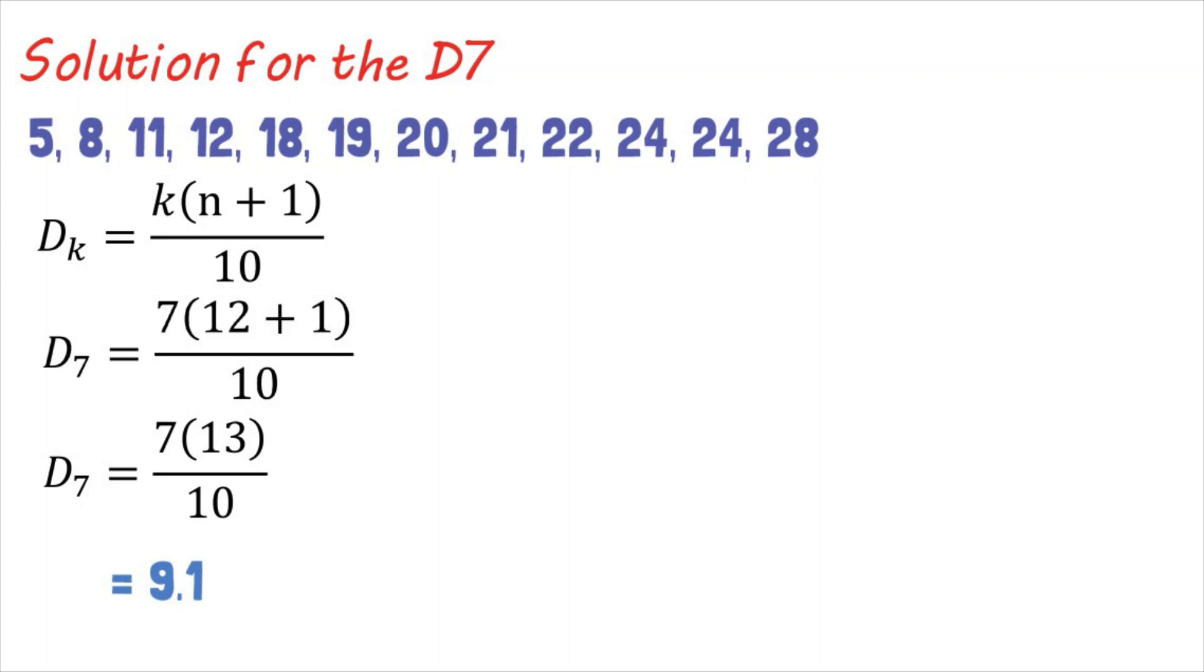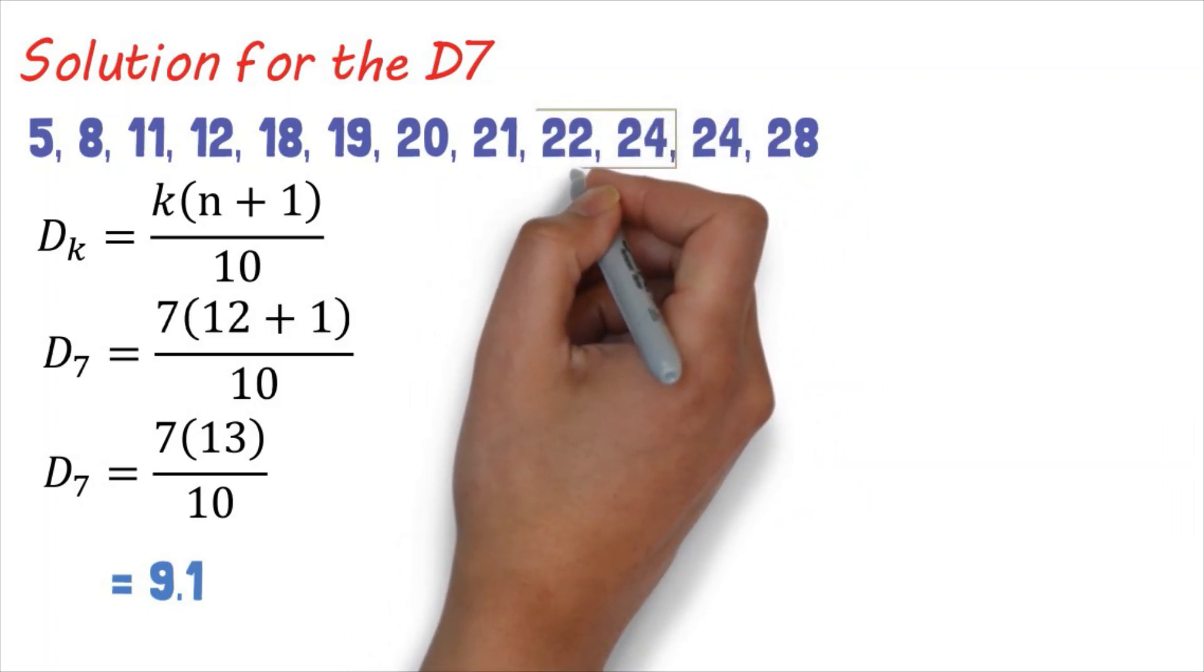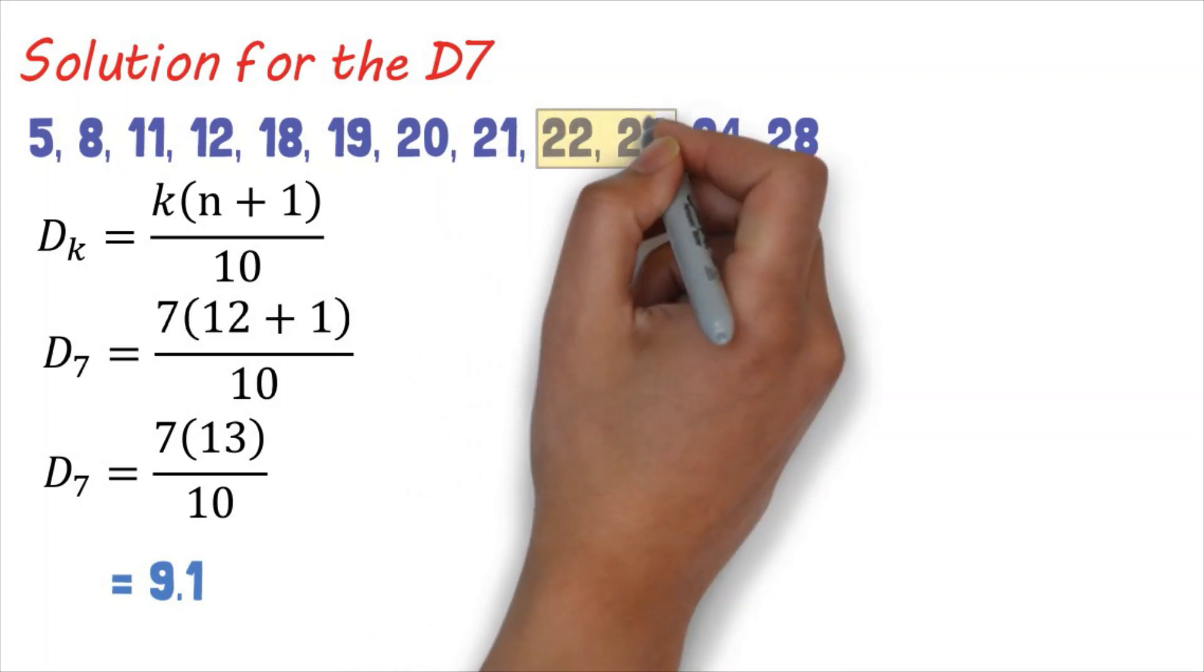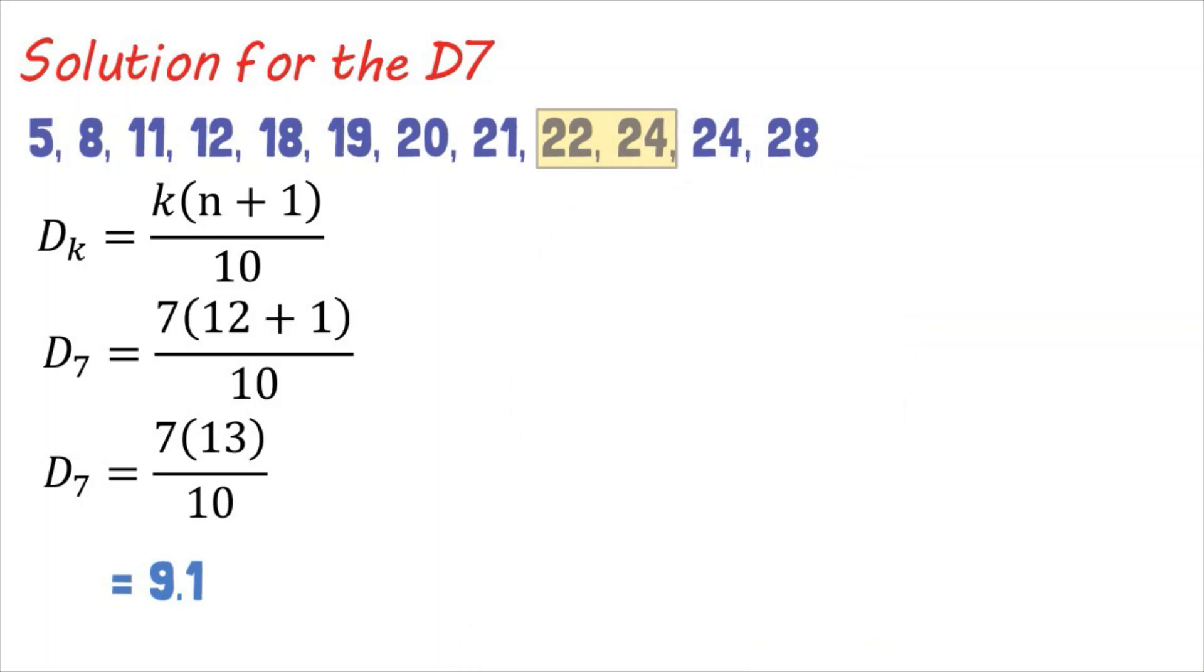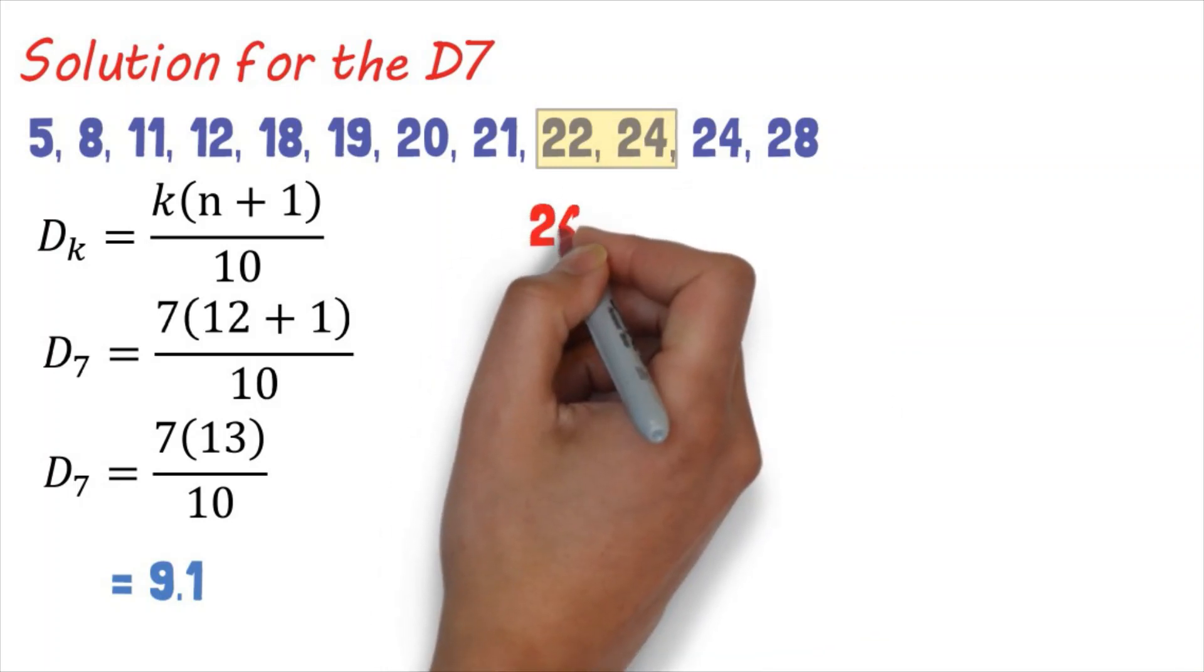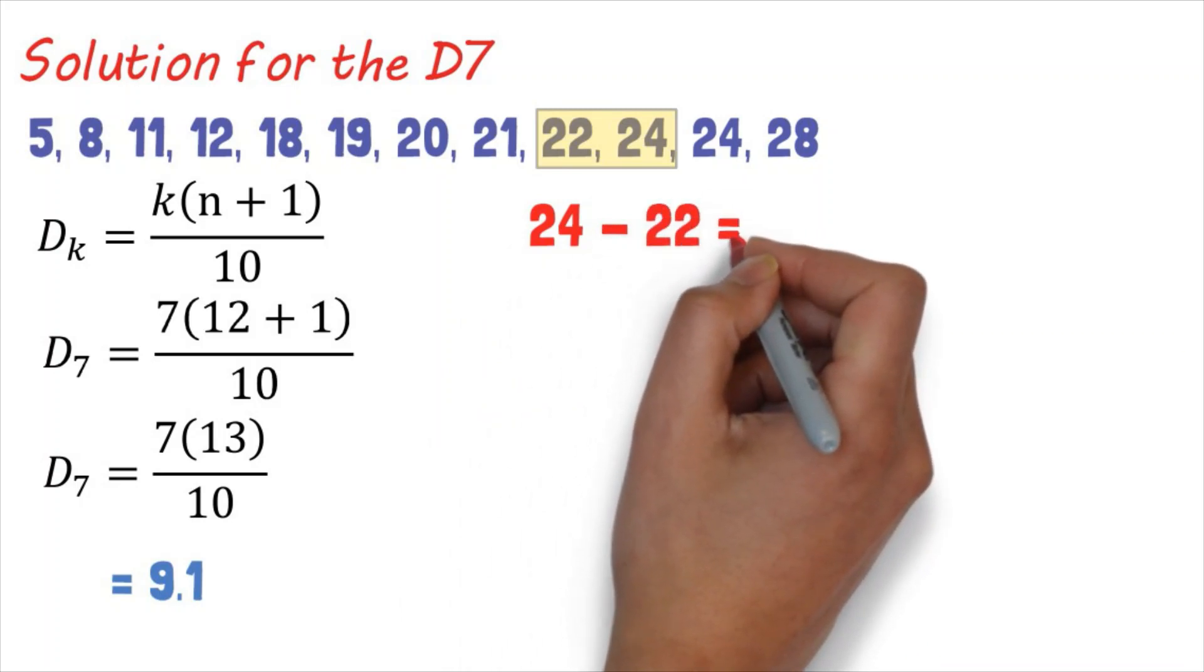Since we have 9.1, we'll get the 9th and 10th number in the distribution since 9.1 lies between the two numbers. So we have 22 and 24. We'll subtract the two that gives us 24 minus 22 which equals 2.